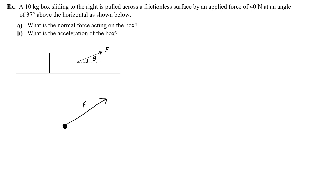Right away I'm going to break this into components. With theta adjacent to the x component, I can use cosine, so that component is F cosine theta. The y component is F sine theta. If I need to think of it as a right triangle and use SOH-CAH-TOA to figure it out, I can totally do that.